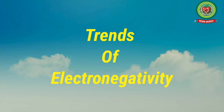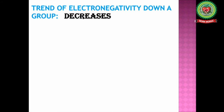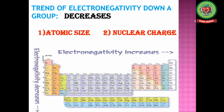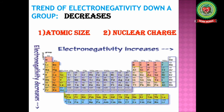The next topic we are going to discuss is the trend of electronegativity while moving down a group. While moving down a group, the value of electronegativity decreases. It depends upon two factors: atomic size and nuclear charge. As we move from top to bottom in a group, the size of the atom increases due to an increase in the number of shells.